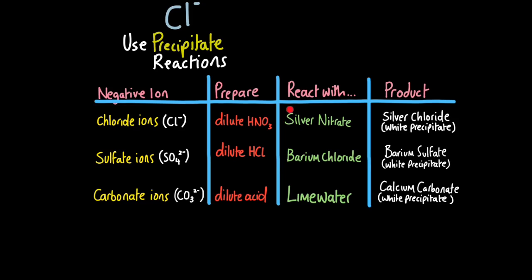This will show itself as a white precipitate, a white cloudy substance. For sulfate ions, you use dilute hydrochloric acid and the chloride will bond to impurities and make them soluble so you don't get any false positives. But this time you react with barium chloride. And this will produce barium sulfate. And this is also a white precipitate. In other words, a white powdery solid substance. And finally, carbonate ions. Well, you can get a carbonate and you can put some dilute acid and this will actually liberate carbon dioxide. And carbon dioxide can be tested for with lime water, which will turn cloudy.